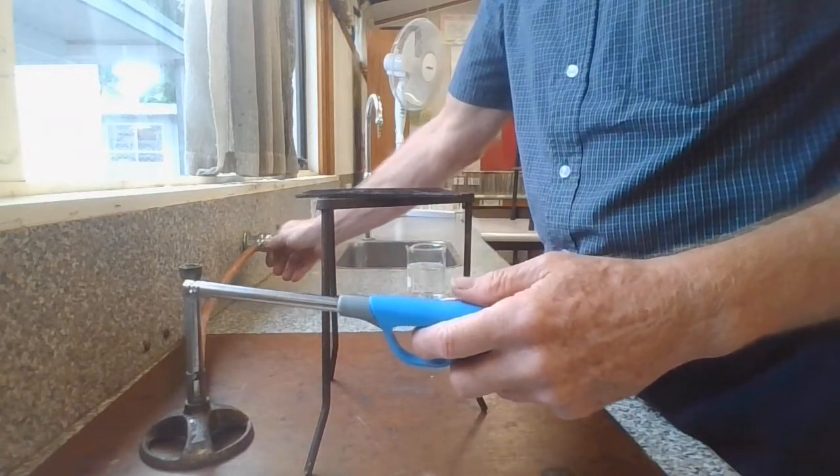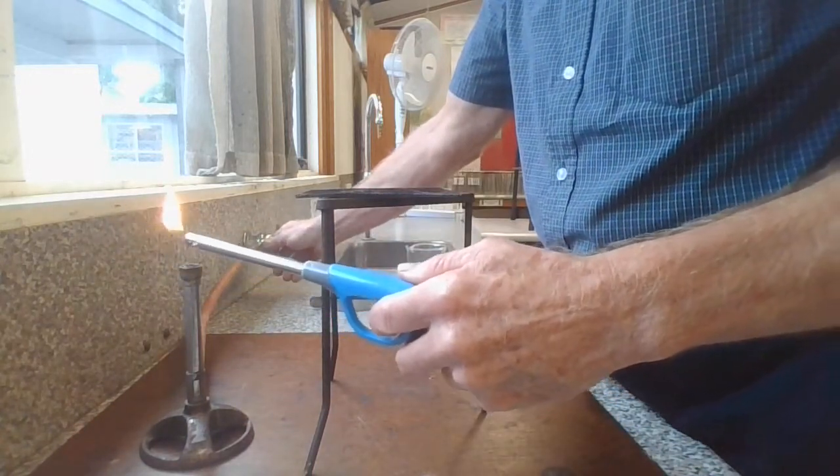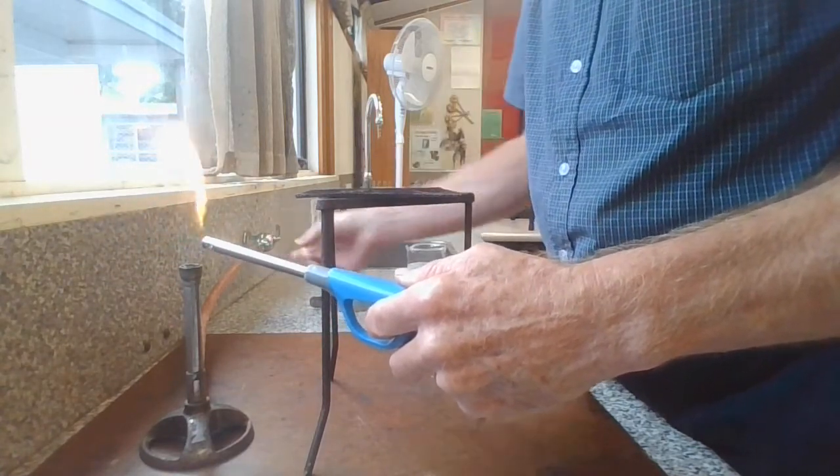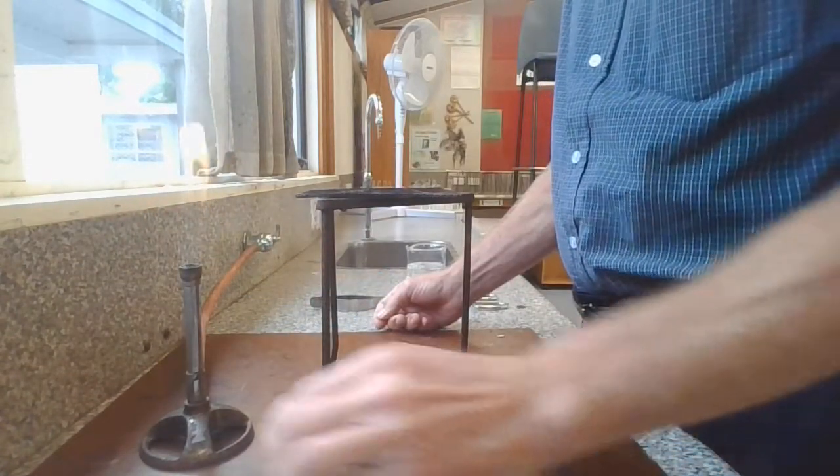Don't light the Bunsen while it's under the tripod. You need to remove the Bunsen from under the tripod to light it safely. Adjust your flame.